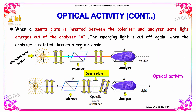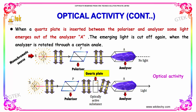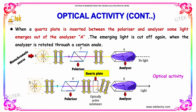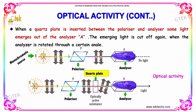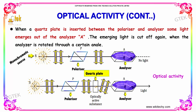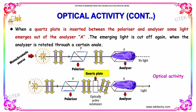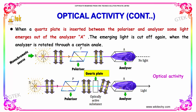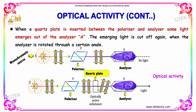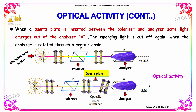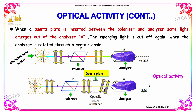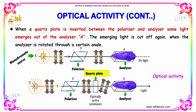Whereas when a quartz crystal is inserted between the polarizer and analyzer, some light emerges out of the analyzer A. The emerging light is cut off again when the analyzer is rotated through a certain angle. This is referred to as optical activity.